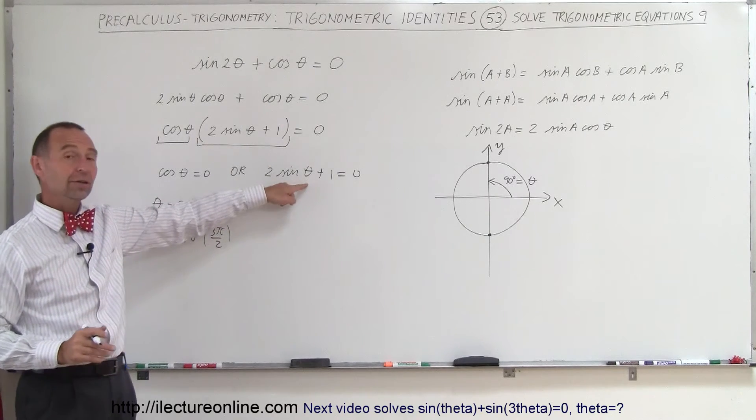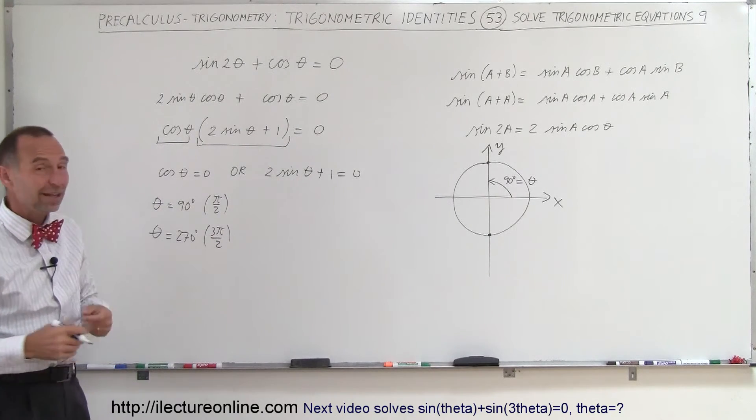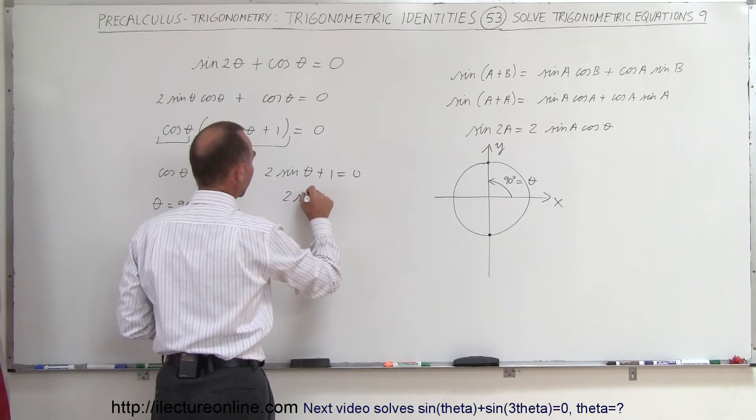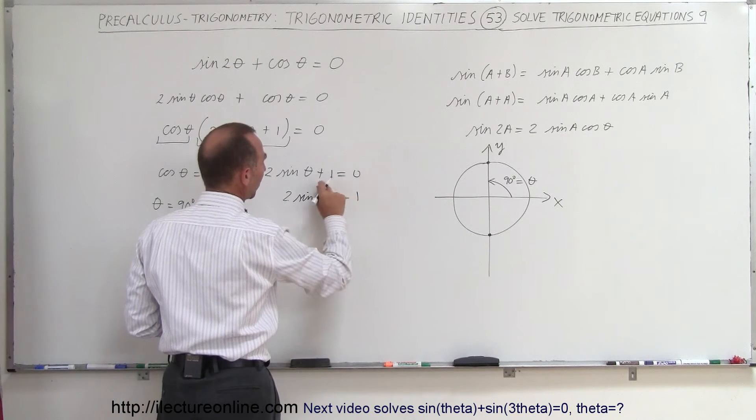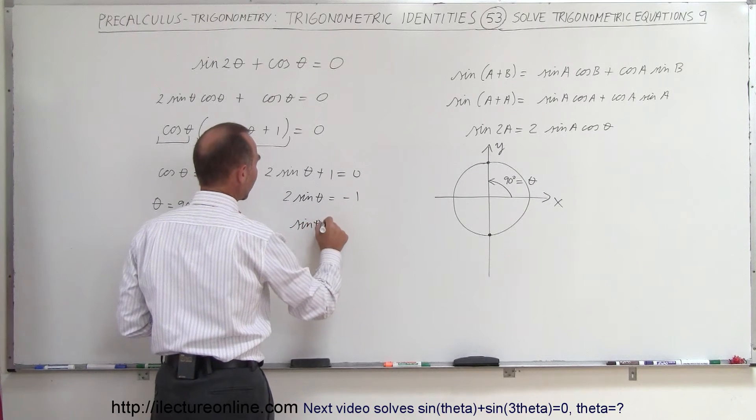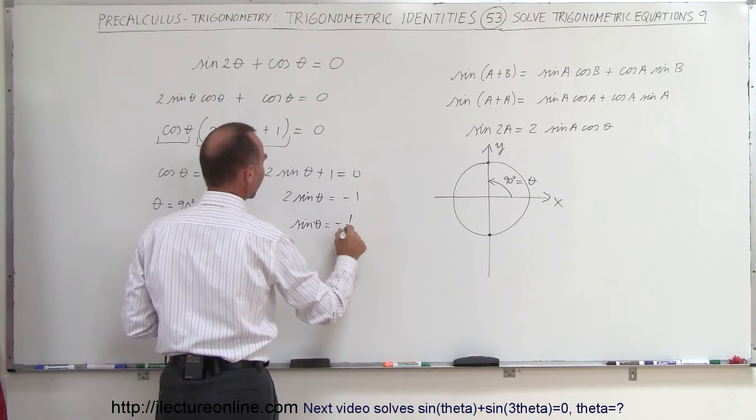Now we solve this part, this equation right here, to see if there's any additional solutions. So we have 2 times the sine of theta equals negative 1. We'll bring the 1 across, divide both sides by 2, we get the sine of theta is equal to minus 1 half.